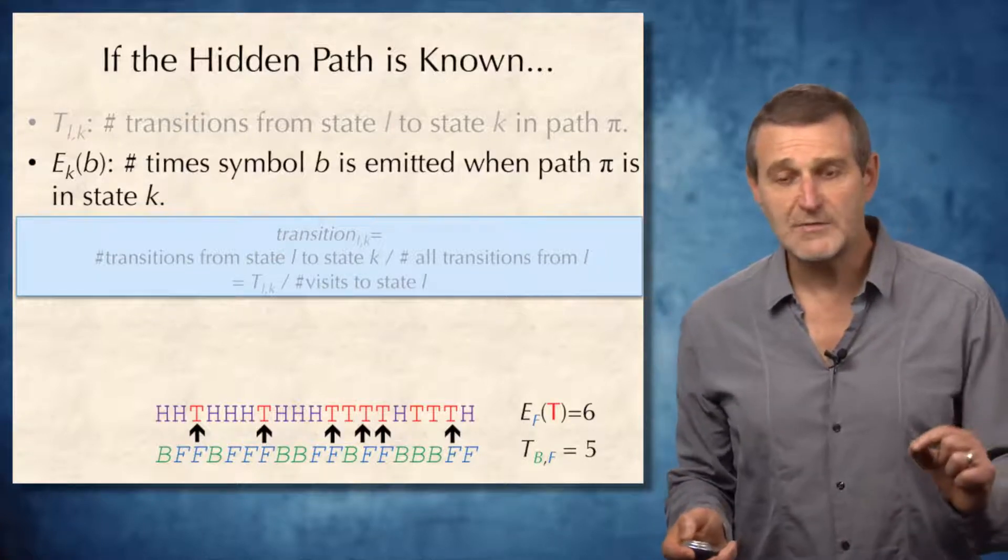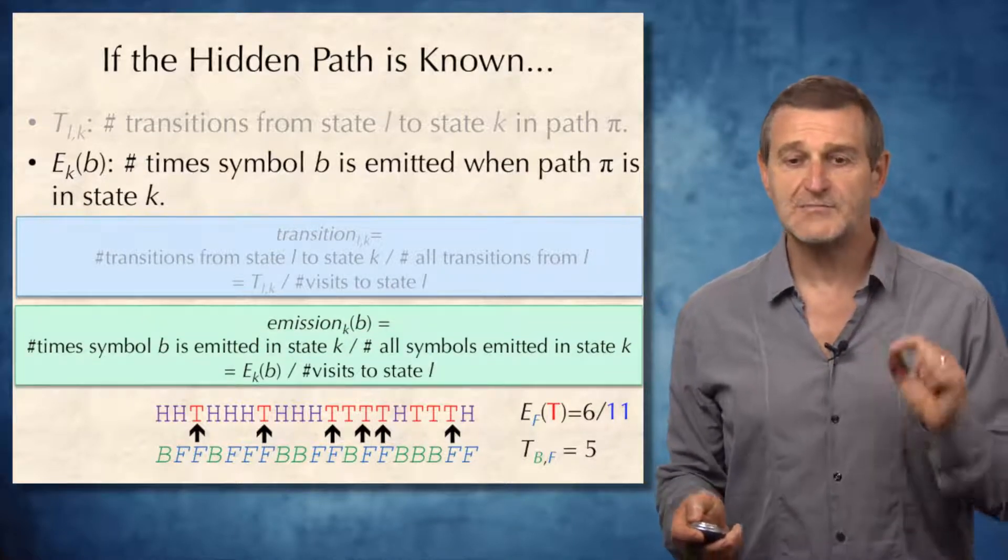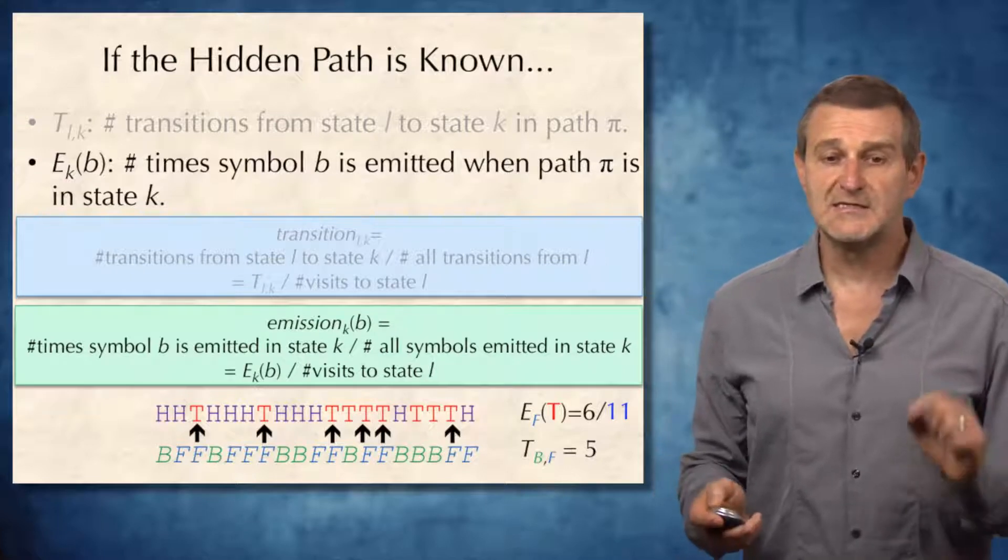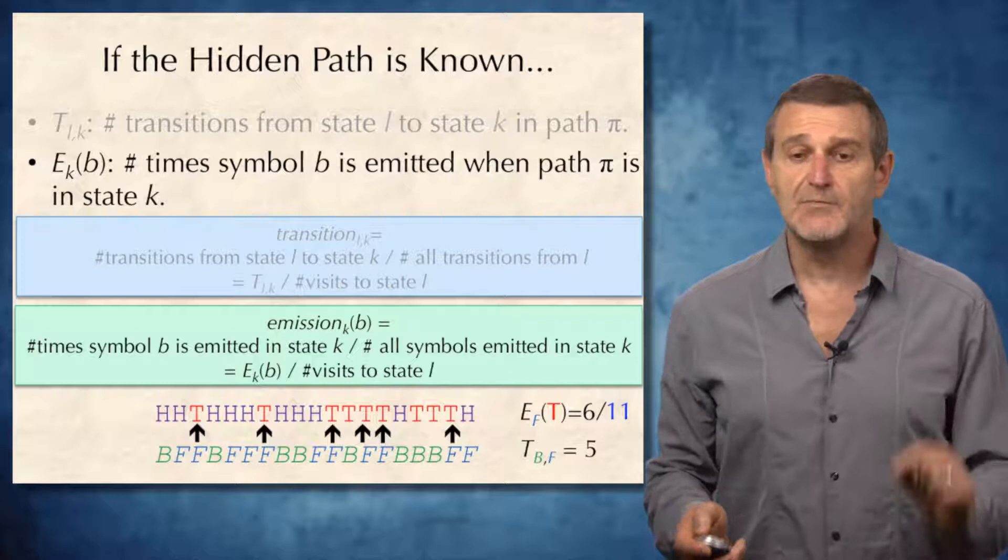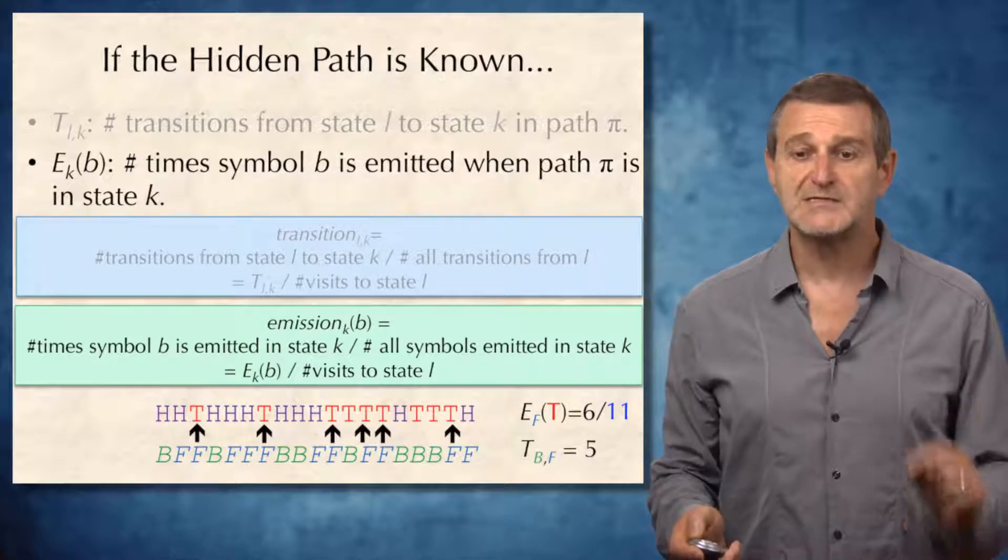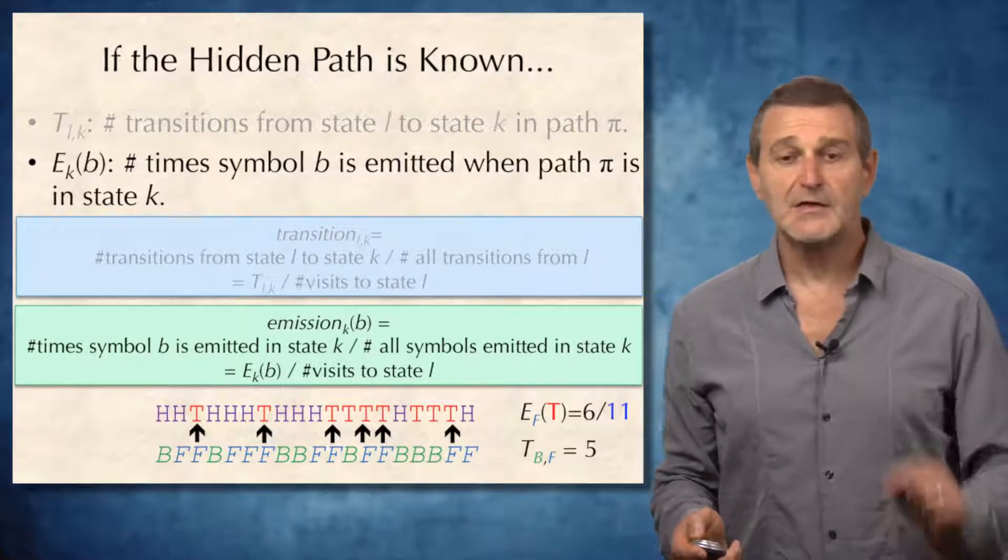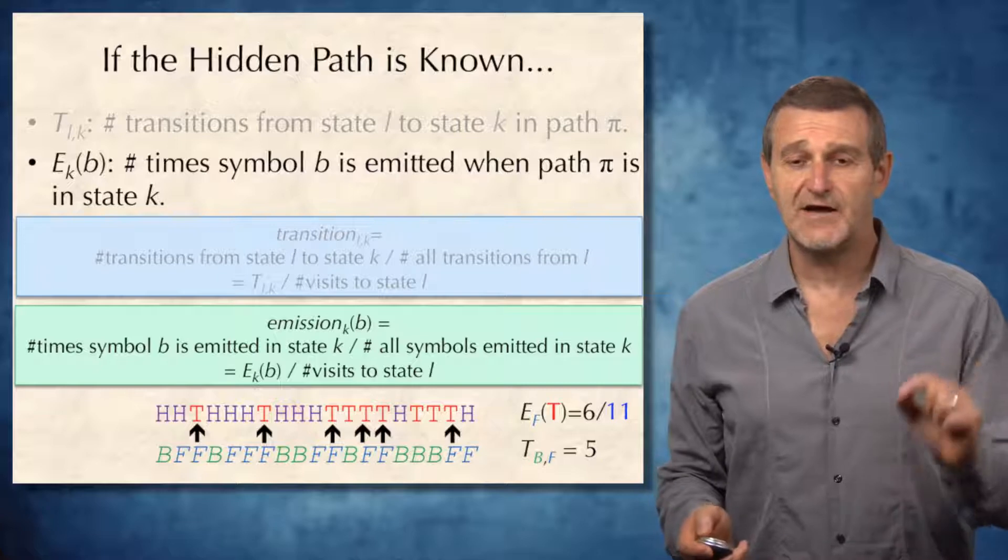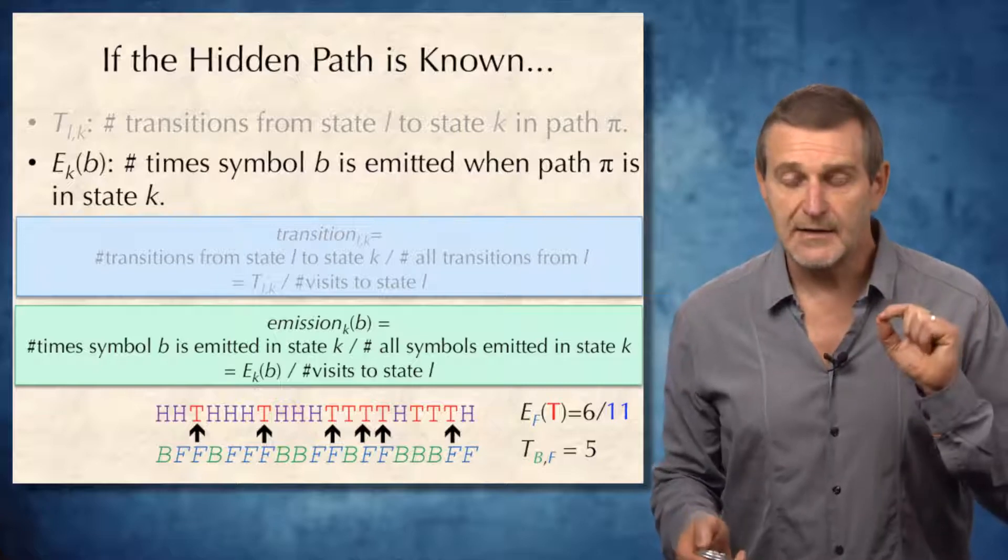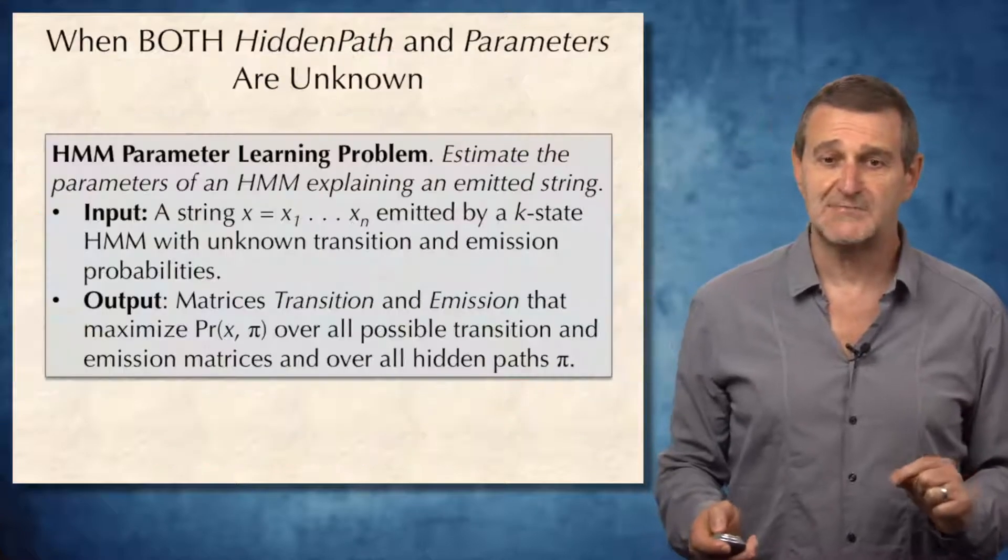In our case, it's 6 over 11. It turns out that transition and emission probabilities defined in this way define the optimal solution of the HMM parameter estimation problem.